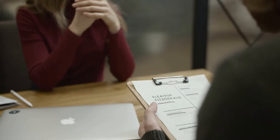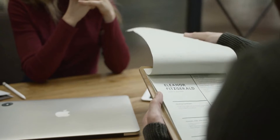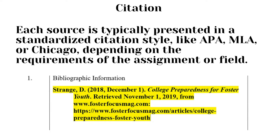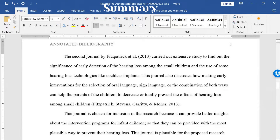Here's a more detailed breakdown of what an annotated bibliography includes. Citation: each source is typically presented in a standardized citation style, like APA, MLA, or Chicago, depending on the requirements of the assignment or field. Summary: the annotation begins with a brief summary of the source, highlighting the main points, arguments, and findings.